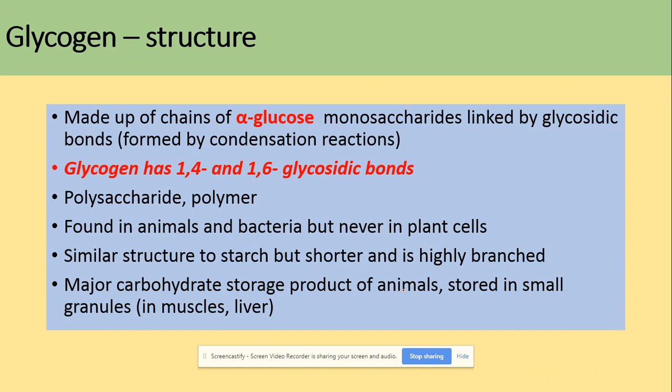Another polysaccharide you need to be aware of is glycogen. Glycogen is made of alpha glucose, same as starch, and is of course linked by glycosidic bonds. Here we will have two types of bonds: 1,4 and 1,6. What does that actually mean? Carbon number one bonded to carbon number four for the 1,4 linkage, or carbon number one bonded to carbon number six for the 1,6 linkage.